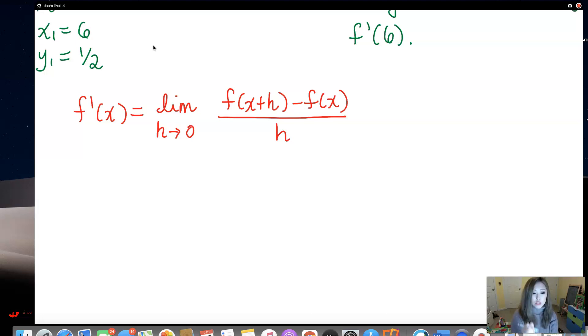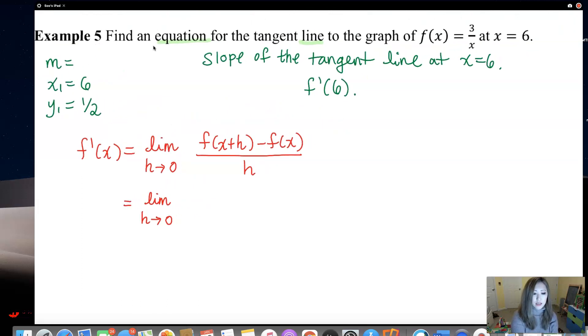Now let's focus on the difference quotient. Ignore this limit. You keep on writing this until you plug in h equals 0. But the first thing I need to do is I need to plug in this x plus h into x. The x plus h will go right in. So first thing I need to write down is 3 over, instead of 3 over x, it's going to be 3 over x plus h.